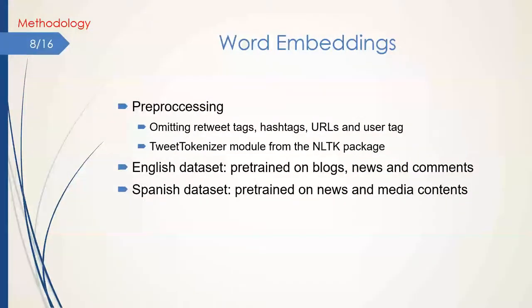As mentioned before, we utilize various types of features. The next one I want to explain is the use of word embeddings. To prepare the text for extracting these features, we omit retweet tags, hashtags, URLs, and user tags, and use the tweet tokenizer module of the NLTK package for tokenizing the text of the tweets. For both English and Spanish languages, we use medium-sized pre-trained models of the spaCy package of Python, which are trained on various sources of English and Spanish textual content. At the end, each user is represented as the weighted average of word embeddings for all the words available in the user's tweets. The frequency of each word is used as the weight factor in the weighted average.